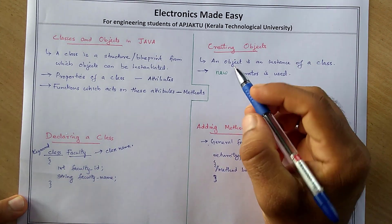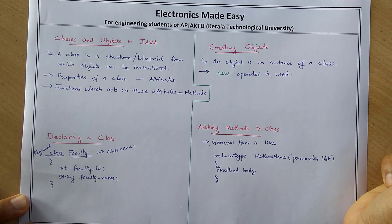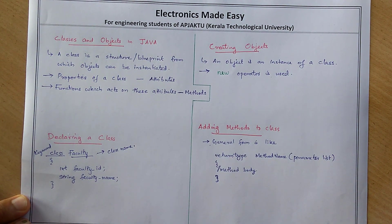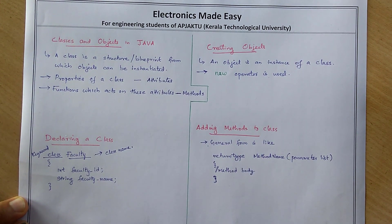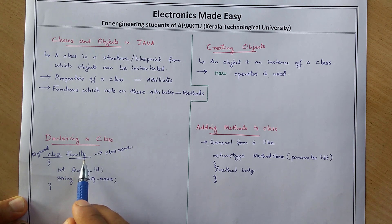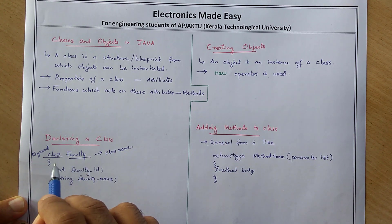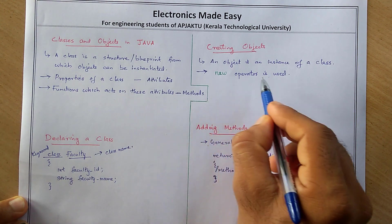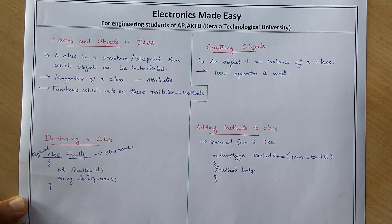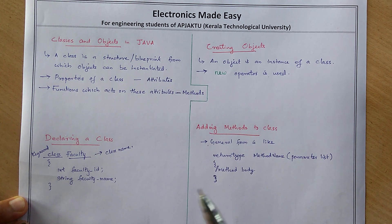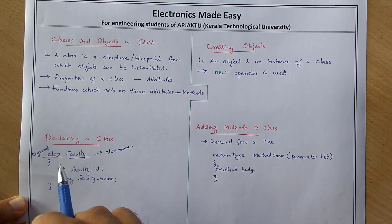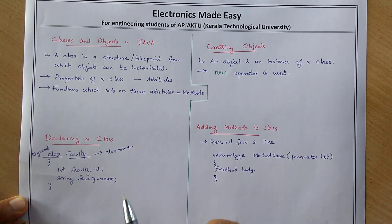Now we are going to discuss how we can create an object using a class. An object is an instance of a class, and it can be created using the 'new' operator. We have a class Faculty, and we can create multiple objects of that class — faculty1, faculty2, faculty3 — using the new operator.